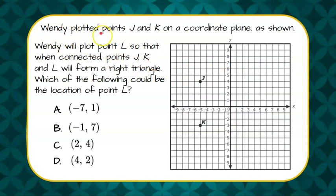Here's our question. Wendy plotted points J and K on the coordinate plane as shown. Here's J and K. Now Wendy is going to plot a point L so that when connected to J and K it will form a right triangle.